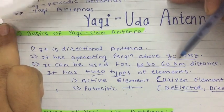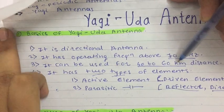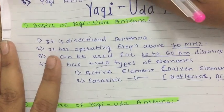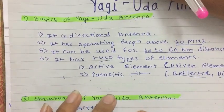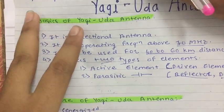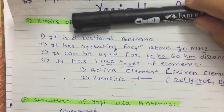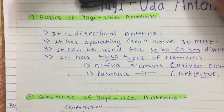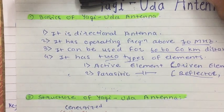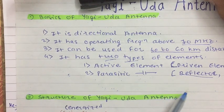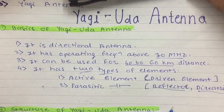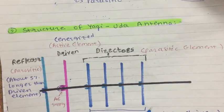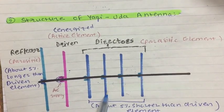Basically, Yagi-Uda antenna is made up of two types: active elements and parasitic elements. In any antenna, if you provide feeding to some elements, those are active elements. Parasitic elements are not connected to supply — only active elements are connected to power supply. In Yagi-Uda, the driven element is the active element, and the parasitic elements are the reflector and directors. The driven element is connected to supply; reflector and directors are not.